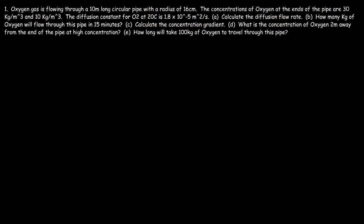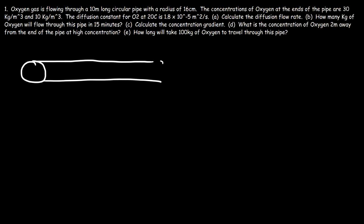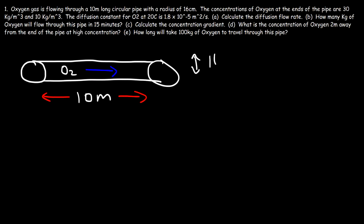In this video we're going to focus on Fick's Law of Diffusion. In this problem we have a long circular pipe that is 10 meters long and oxygen gas is flowing in it. The cross-sectional radius of the pipe is 16 centimeters, and the concentrations are 30 and 10 kilograms per cubic meter.